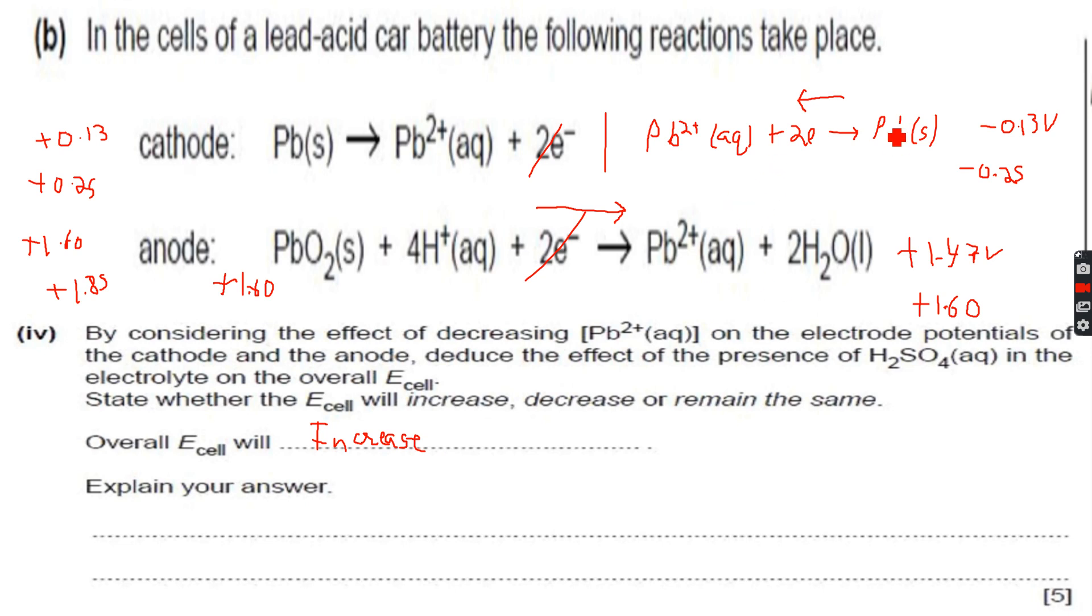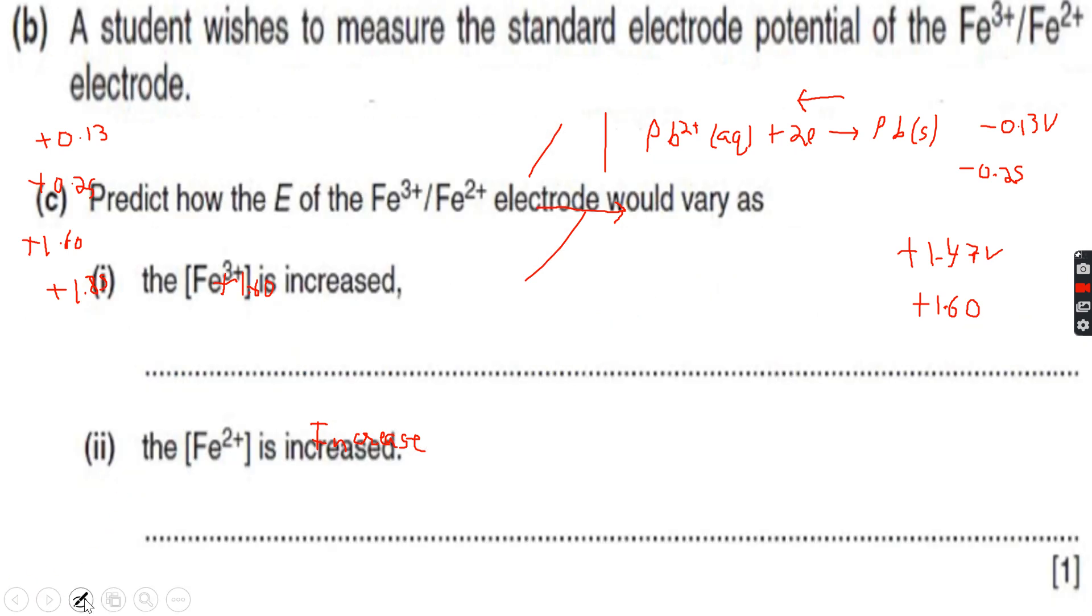that this will become more negative because equilibrium will shift to the left. And this will become more positive because equilibrium will shift to the right. So you can explain this using Le Chatelier's principle. So this is also done. Now, I think this is the last question on this topic.